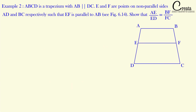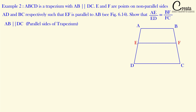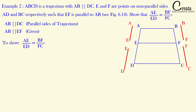Let's move to Example number 2. ABCD is a trapezium with AB parallel to DC. E and F are points on the non-parallel sides AD and BC respectively, such that EF is parallel to AB. Show that AE upon ED is equal to BF upon FC. In this trapezium, AB and DC are the parallel sides, while AD and BC are the non-parallel sides. Point E is on AD and F is on BC. It is also given that AB and EF are parallel to each other, and we have to prove that AE upon ED equals BF upon FC.